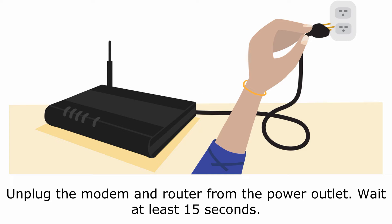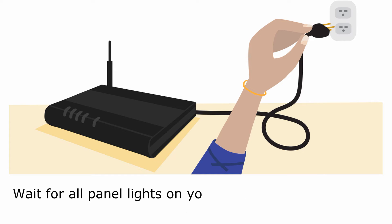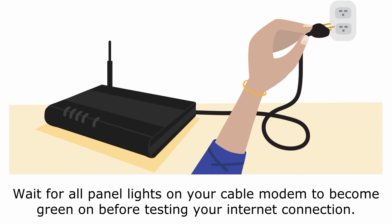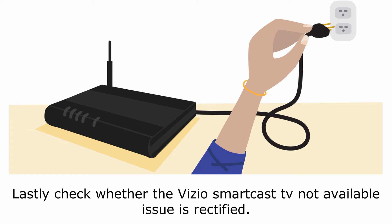Unplug the modem and router from the power outlet. Wait at least 15 seconds. Plug the modem back into the power outlet first, wait 1-2 minutes, then power on the router. Wait for all panel lights on your cable modem to become green before testing your internet connection. Lastly, check whether the Vizio SmartCast TV not available issue is rectified.